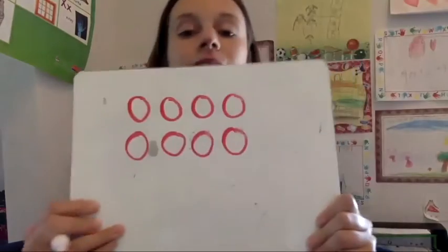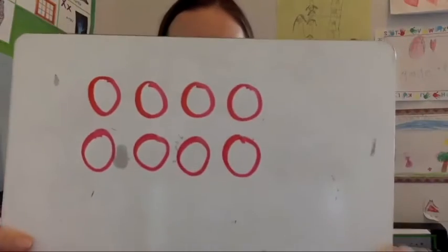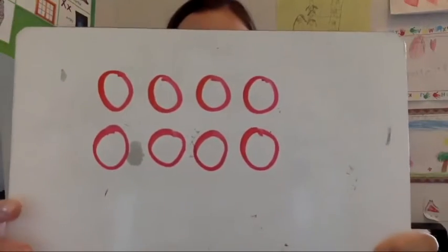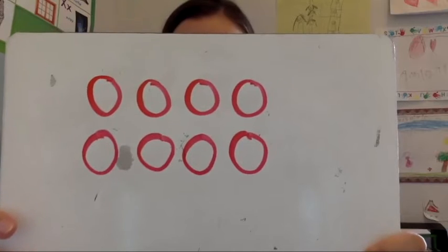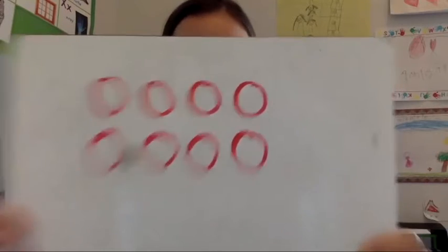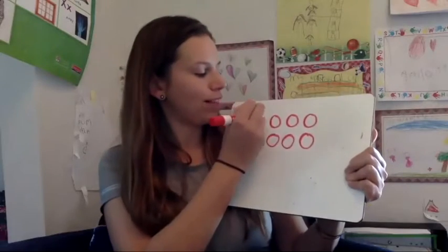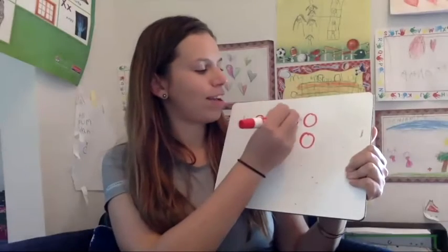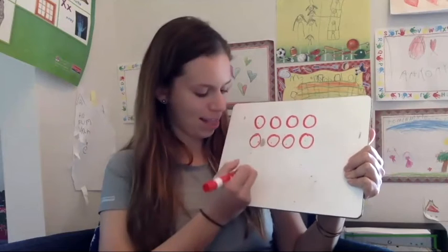I'm going to draw dots. You should count how many dots there are. How many dots am I showing you? That's right, there are eight dots — one, two, three, four, five, six, seven, eight.